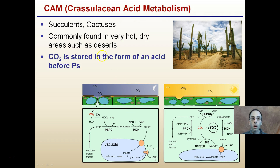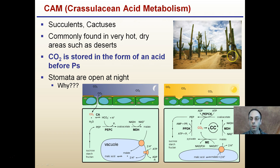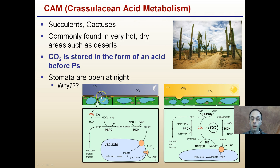CAM plants — crassulacean acid metabolism — are succulents and cacti commonly found in very hot, dry areas such as deserts. In these plants, carbon dioxide is stored in the form of an acid before the photosynthetic process can occur. The stomata are open at night because in such hot and dry environments, opening stomata during the day would result in too great a water loss. Opening stomata at night allows CO2 to come in while eliminating much of that water loss, though light is still needed for photosynthesis.